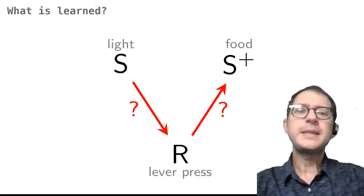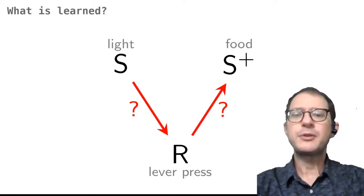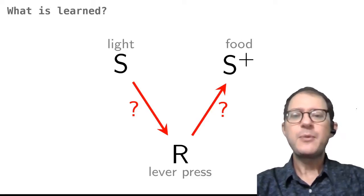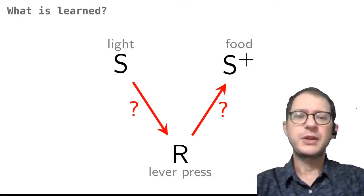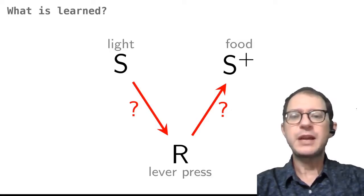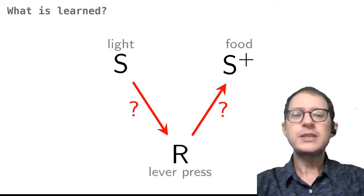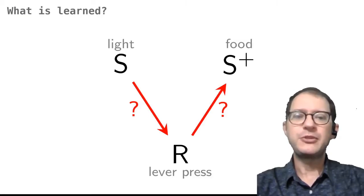We can recall also that a similar discussion exists for Pavlovian conditioning. In that case, we brushed it aside and said, well, there is something that changes during learning, so let's not care for now about what it is, we will just call it associative strength and try to understand how it changes. We are going to use the same trick with instrumental conditioning.